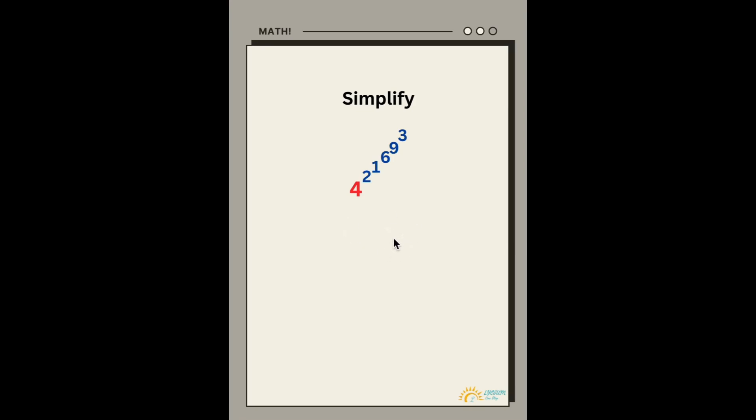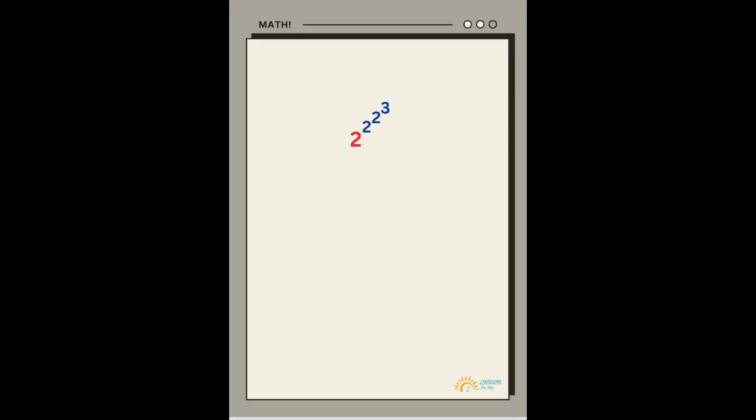Before we get into this problem, let's get into a simpler problem with smaller numbers to understand how rising exponents exactly work. Let's look at this problem: 2 to the power of 2 to the power of 2 to the power of 3.